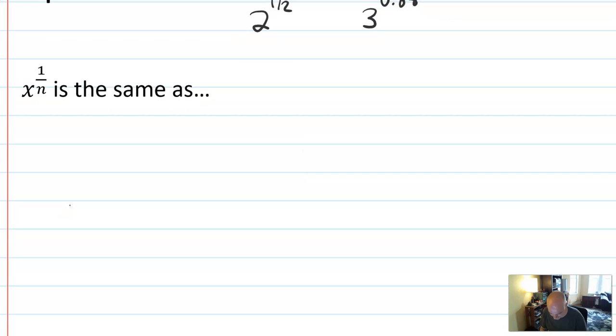They actually have a perfectly valid, wonderful meaning and really are not any different than any other exponent. So let's get into the definition. We'll start slow. So x to the 1 over n is the same as the nth root of x. Those mean the same thing, and I can quickly show you why that's true.